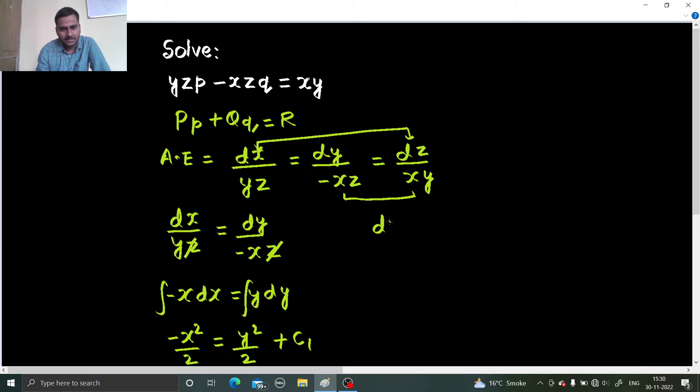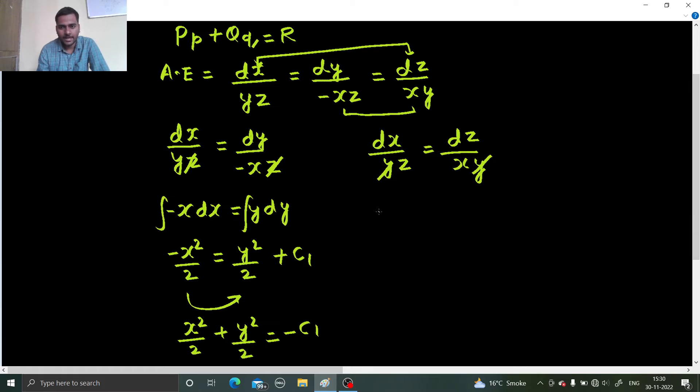So dx divided by yz equals to dz divided by xy. Y getting eliminated. So you are left with x dx equals to z dz. Let's integrate them.